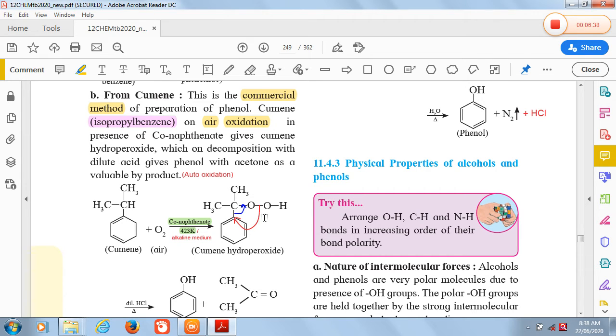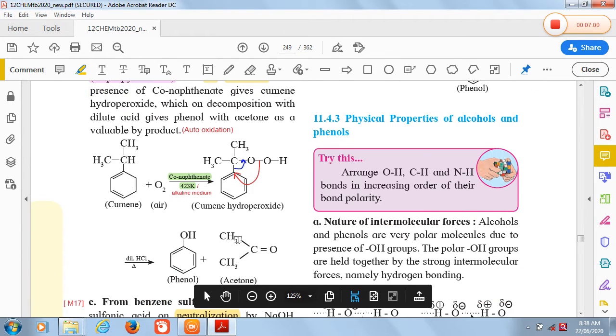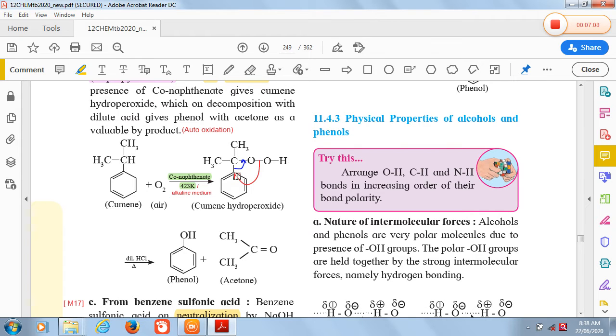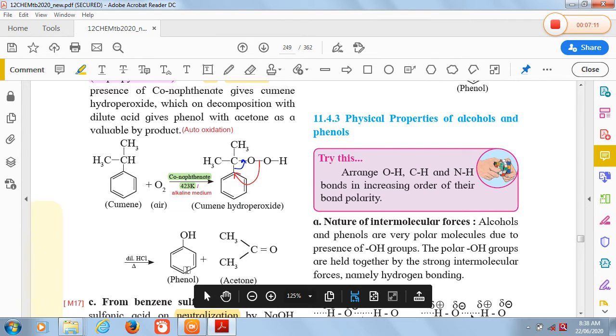Then there is a rearrangement. This O will attack on this sp2 carbon of benzene ring and the bond between this carbon sp2 carbon of benzene ring and this carbon get shifted to C double bond O. So there is a double bond between this C and O and it gives CH3-C=O-CH3. OH is attached to this benzene ring carbon. So we get phenol and acetone as a product when cumene hydroperoxide reacts with dilute acid.